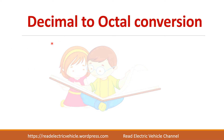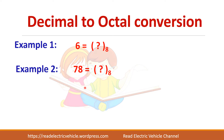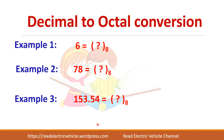Let us learn how to convert the decimal number to an octal number using three examples. Always remember: when you are specifying an octal number, put it in a bracket and specify the base as 8. If it is not specified, it will be considered as a decimal number by default.